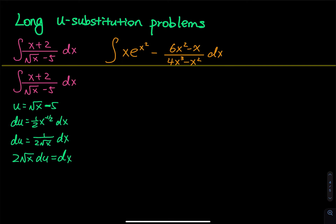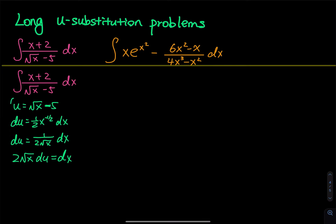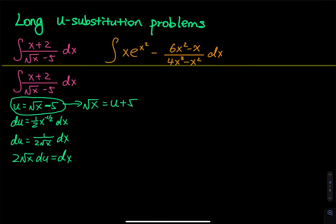Take a look: if you substitute this dx into the integral, that is not going to simplify anything, because the x plus 2 on top needs to be rewritten. To rewrite x plus 2, I take root x minus 5 and rewrite it so that square root of x equals u plus 5. To get x out, I square both sides, so x equals u plus 5 squared.